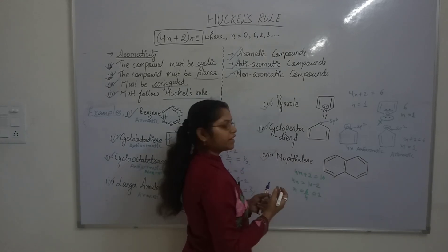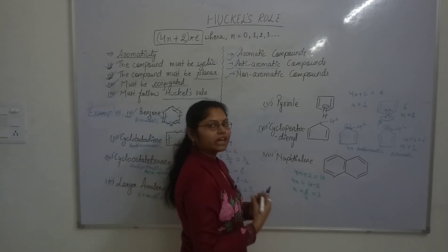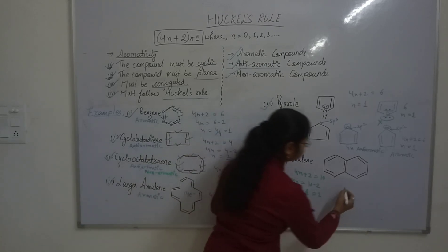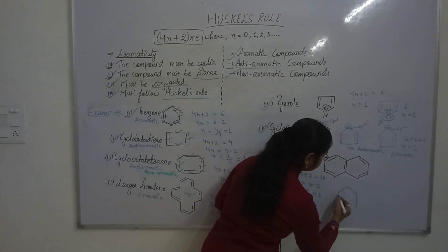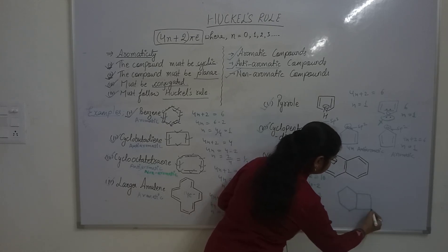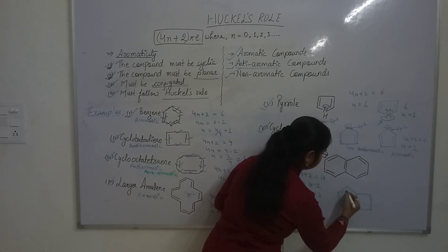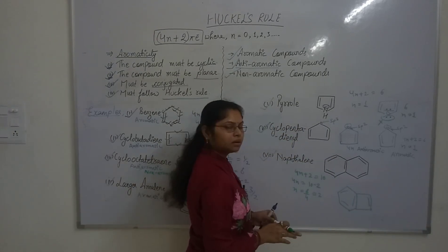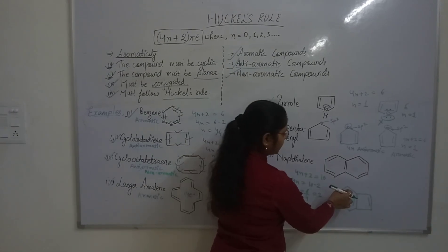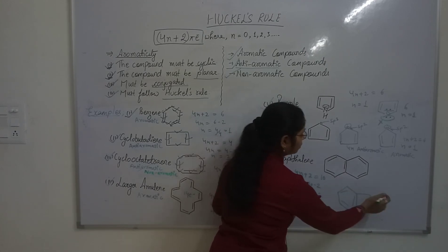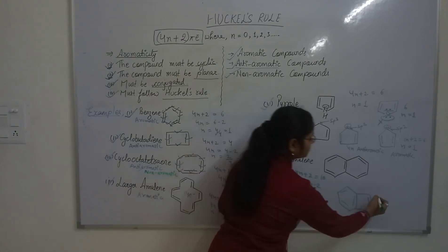Other fused rings like anthracene and phenanthrene are also aromatic in nature. However, some fused rings are not aromatic — for example, a particular fused ring with 4 pi bonds has 8 pi electrons total.